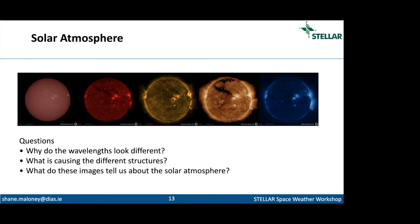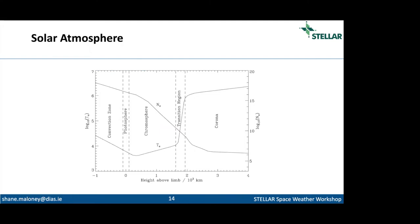Peter showed this plot earlier — here's a slightly different version. We have height above the solar surface on the x-axis, with electron number density on the right-hand axis — probably electrons per meter cubed — and log of temperature in Kelvin. In the photosphere it's relatively low temperature and high density. As we go up in the solar atmosphere, we see a sudden rise in temperature at the transition region up to log 10 to the 6, accompanied by a decrease in density.